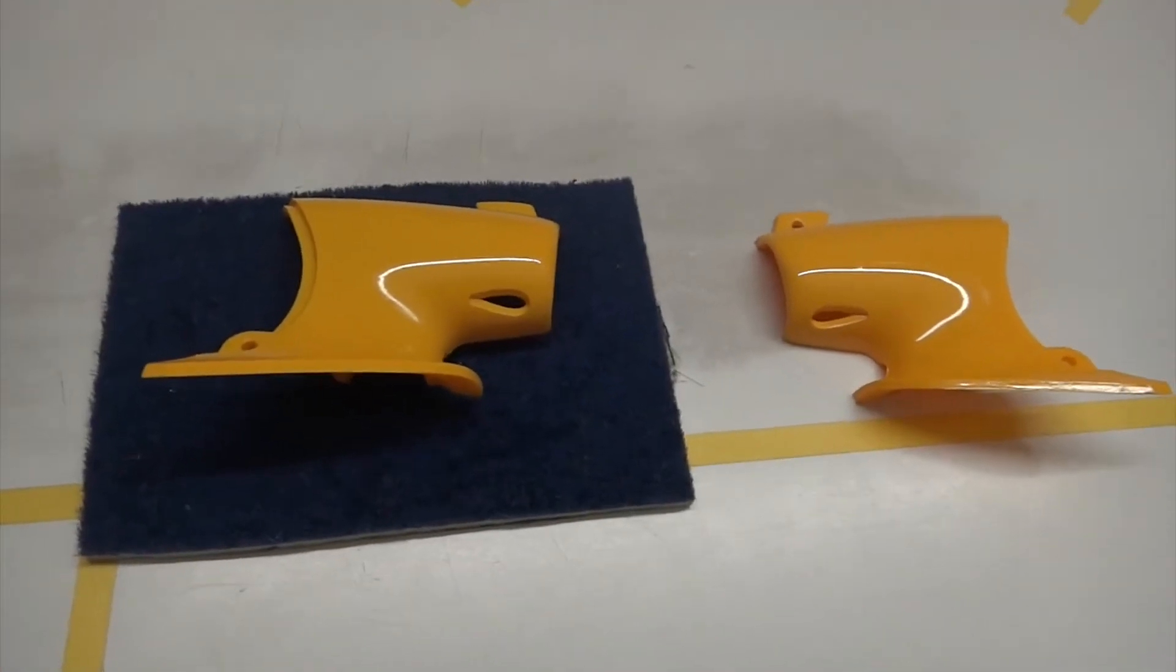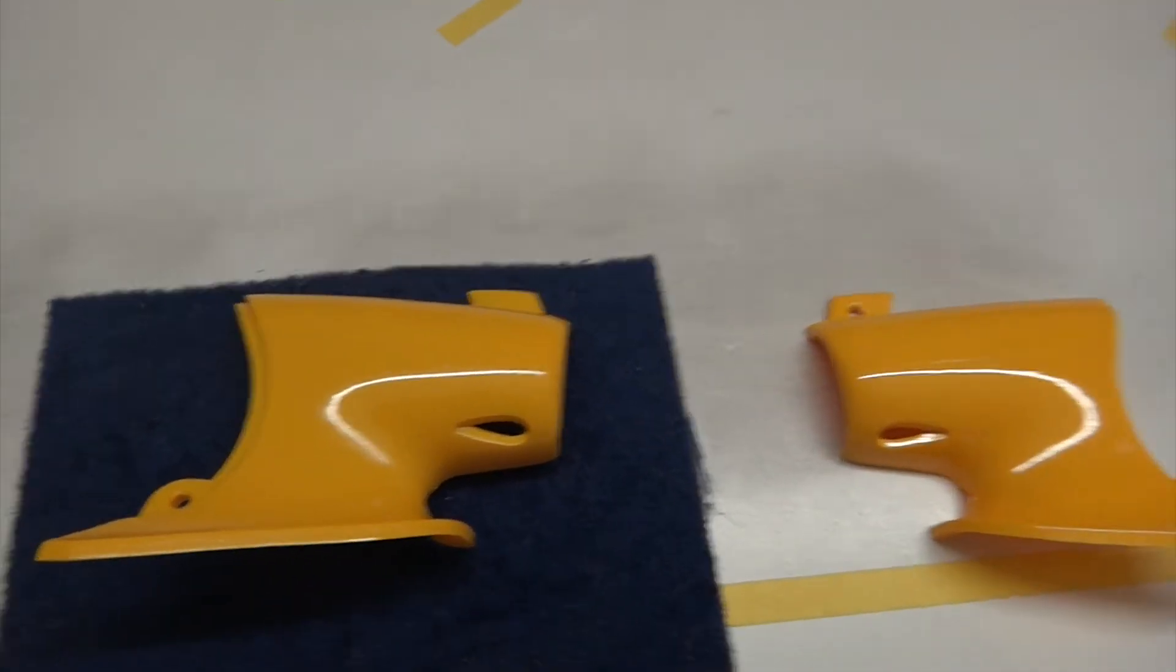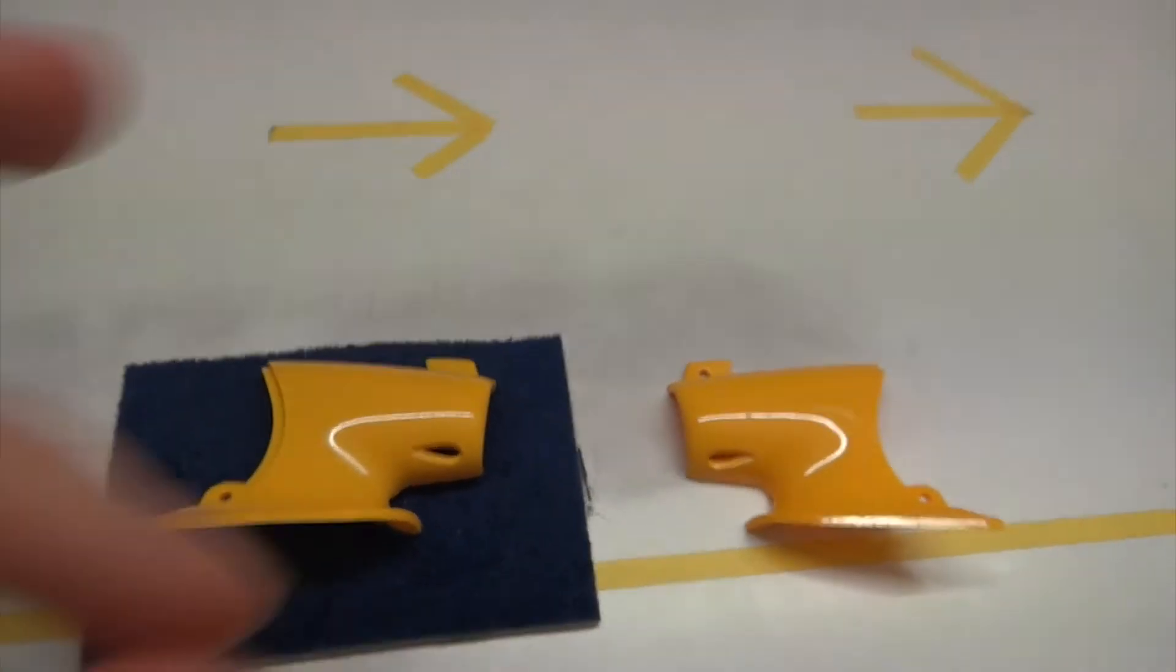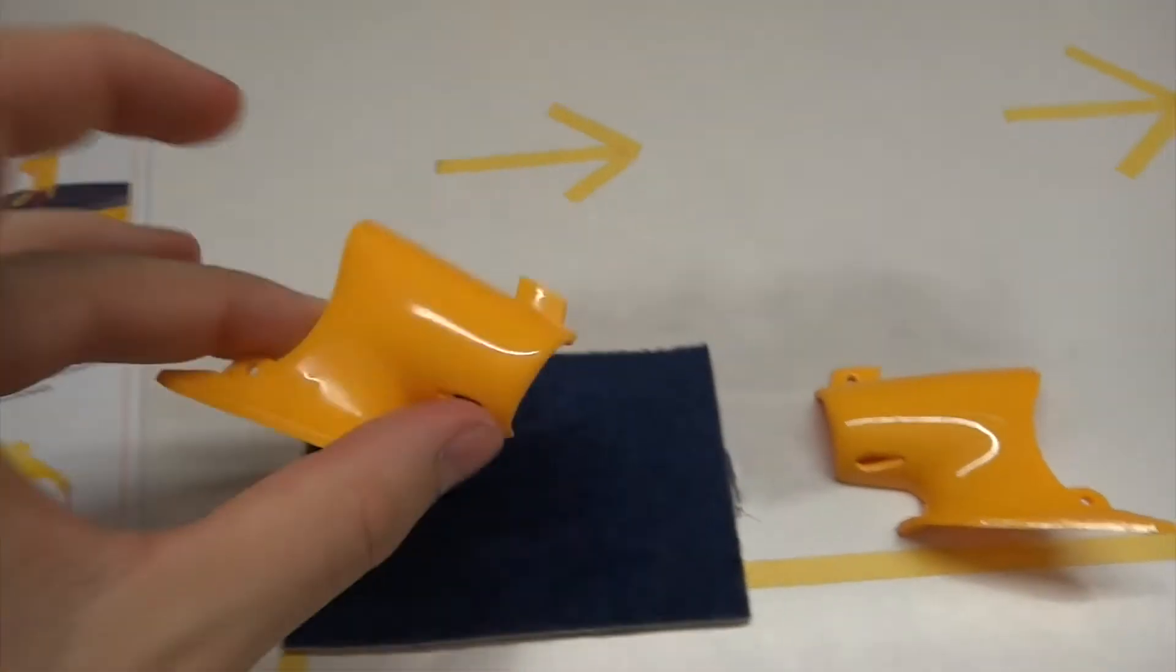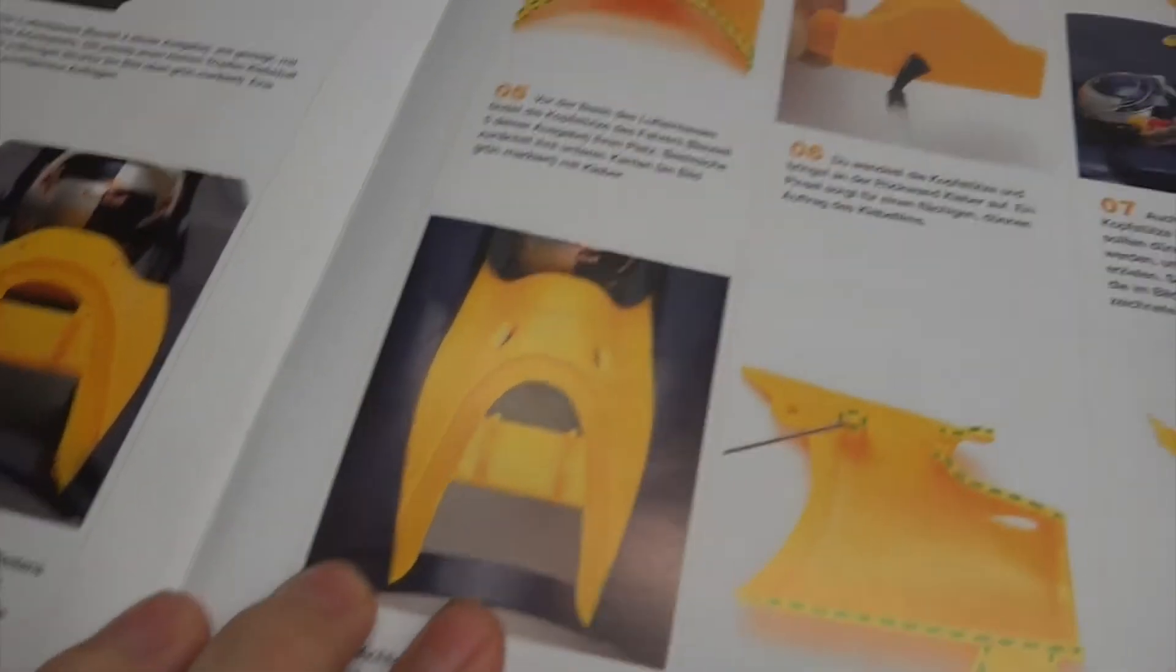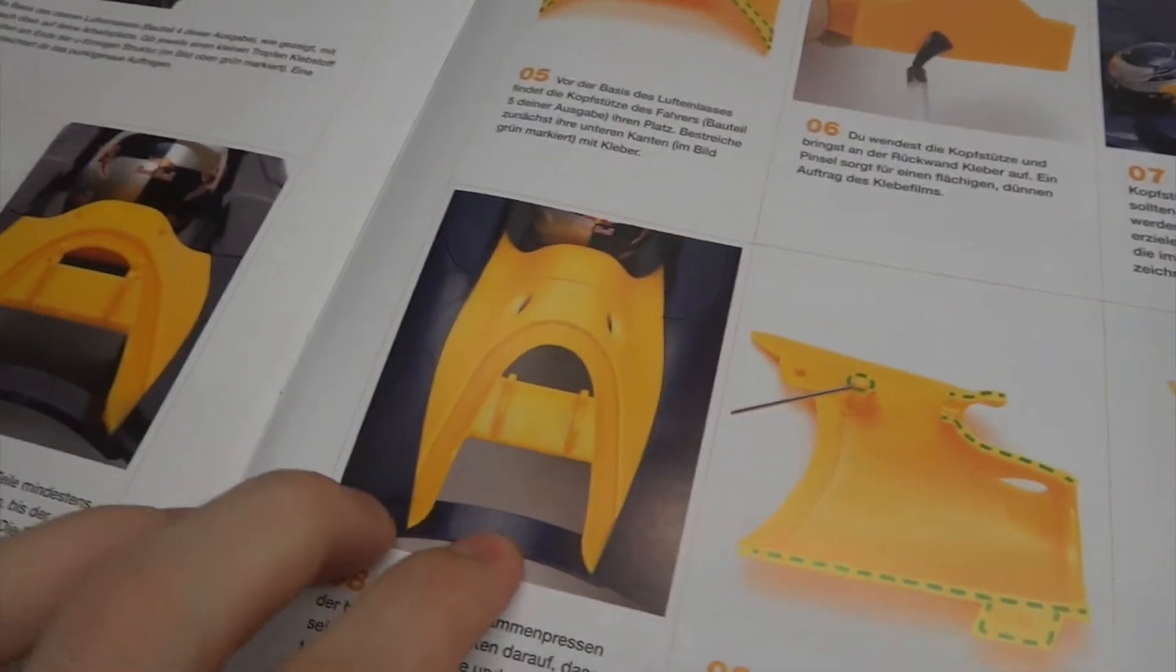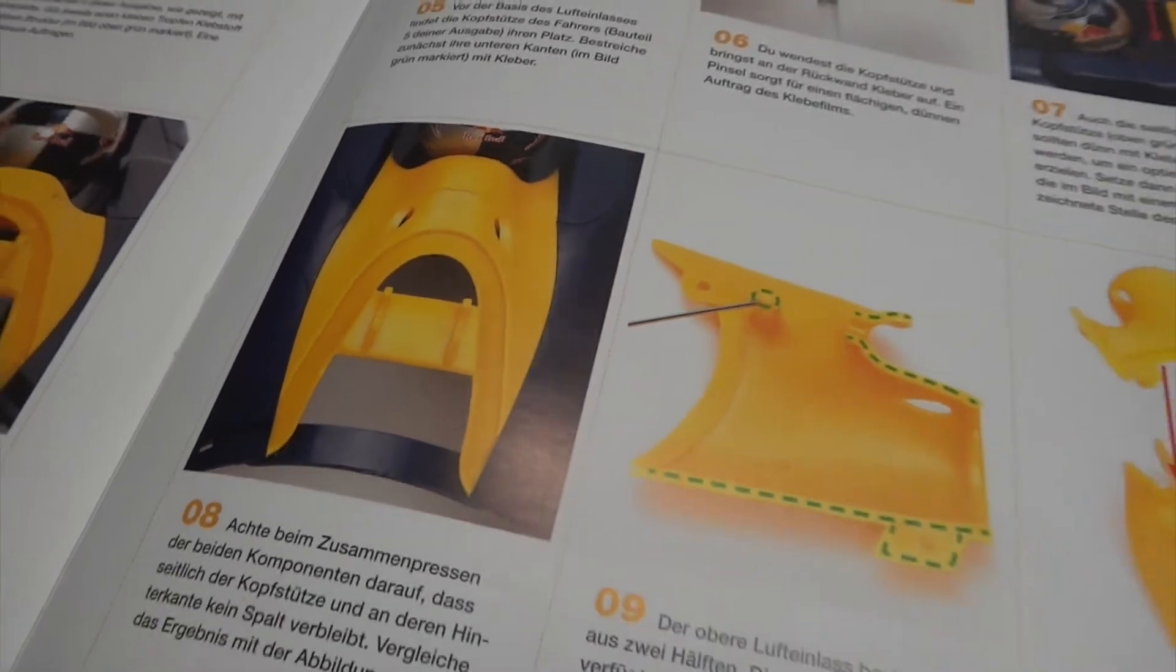Now we're going to be gluing the two halves together before we apply our final coat of chrome yellow to seal off the joins between the two parts. Once we do that, we'll be painting our induction pod mount and gluing that to our middle body of our Red Bull RB7.